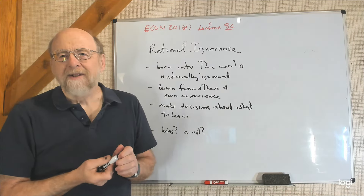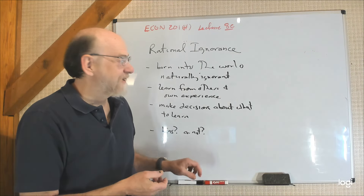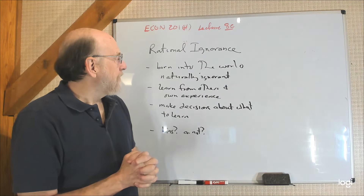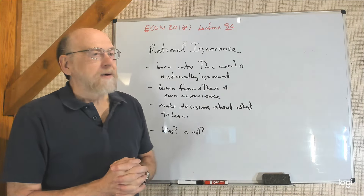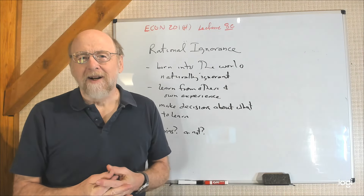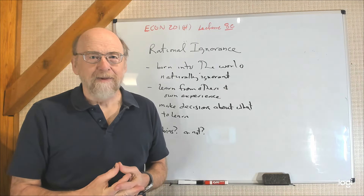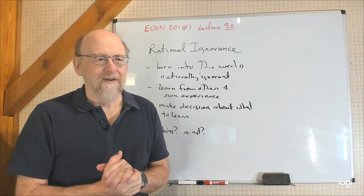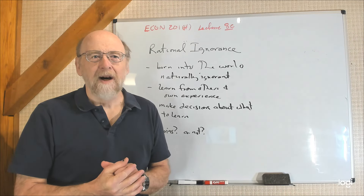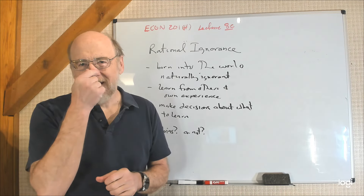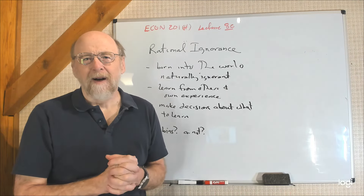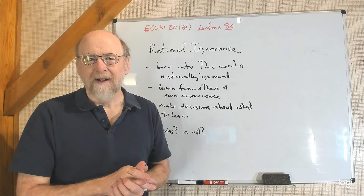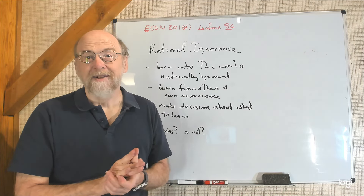What I've jotted down is an outline of the second part of the lecture: rational ignorance. Rational ignorance sounds like a contradiction in terms — we normally think of people who are ignorant as somehow being foolish or not very rational in the way that term is used in ordinary English.